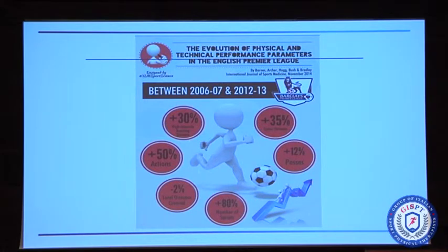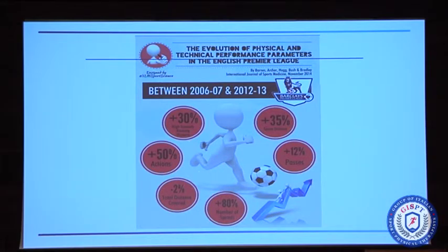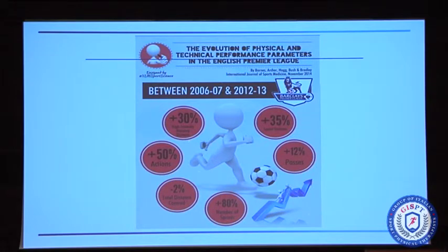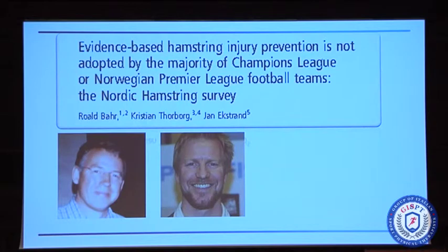One very probable reason is that play has changed during the last 15 years. Hamstring injuries are sprinting injuries, and studies have shown that the intensity of play has increased a lot, with the number of high-speed running bouts increasing about 30%. So it could be that the rise is due to the change of play. But if that is so, there is more reason than ever to work harder with prevention of hamstring injuries at the elite level.